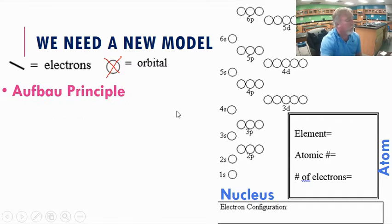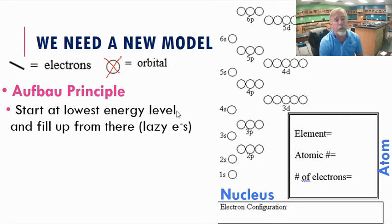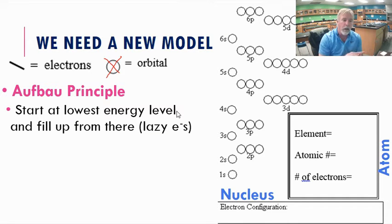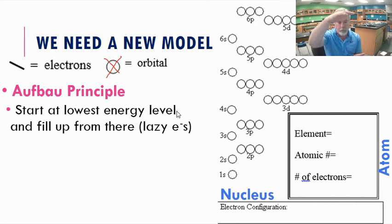The first rule is the Aufbau principle, which tells us to start filling electrons at the lowest energy level — the orbital closest to the nucleus, which is 1s. Think of electrons as lazy: they want to fall to the bottom. Like pouring BBs into a cup, they all go to the bottom first and only start stacking higher when the lower level is full. It's the same with our electrons.